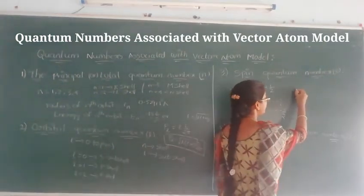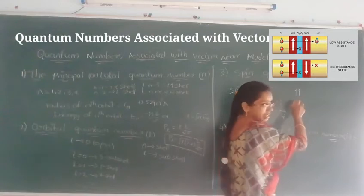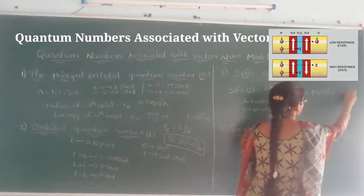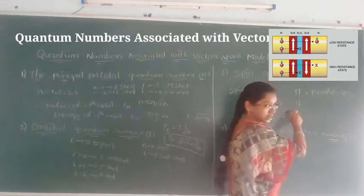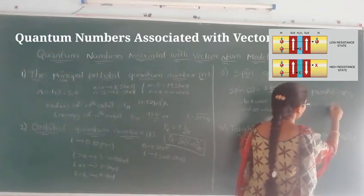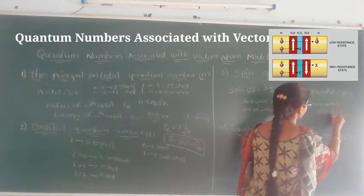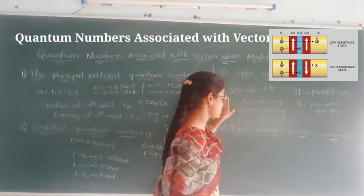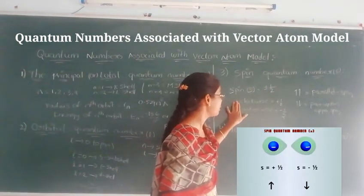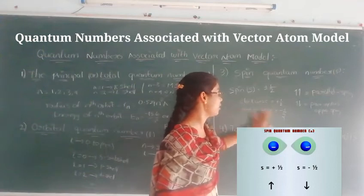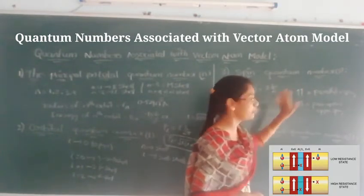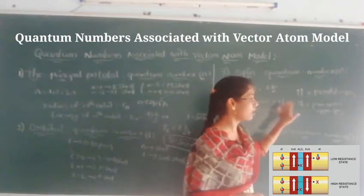When two electrons have spins in the same direction, it is called parallel spin. When they have spins in opposite directions, it is called opposite spin (anti-parallel). Spin quantum number s is denoted with s, and its values are +½ for clockwise and −½ for anticlockwise motion.